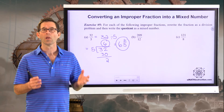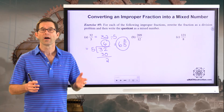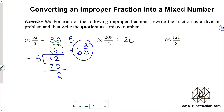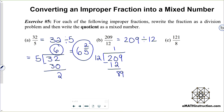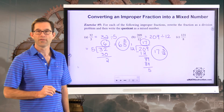For letter B: 209 twelfths is the same as 209 divided by 12. Working through the long division: 12 goes into 20 one time, subtract to get 89, then 12 goes into 89 seven times. So 12 goes into 209 a total of 17 whole times, with a remainder of five left over that still needs to be divided by 12. So 209 twelfths equals 17 and 5 twelfths.